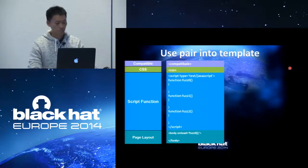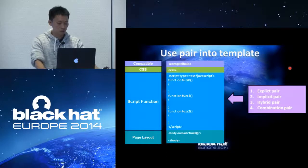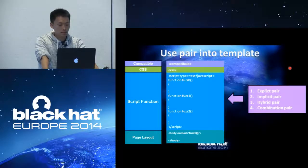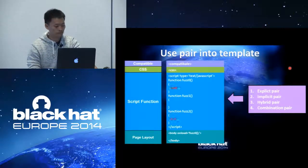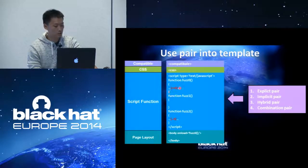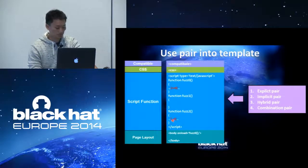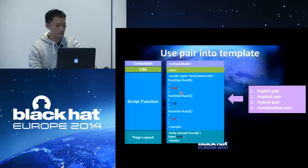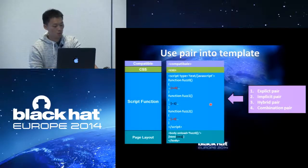So how do we construct test cases? We build a list of pairs — explicit, implicit, hybrid, and combination pairs — then randomly insert these pairs into a template. If we feel certain positions can accept a pair statement, we insert the first statement (marked '+') and the second statement (marked '-') accordingly. Or if we need a static part and dynamic part pairing, we insert them into the respective positions. This is how we build a template.